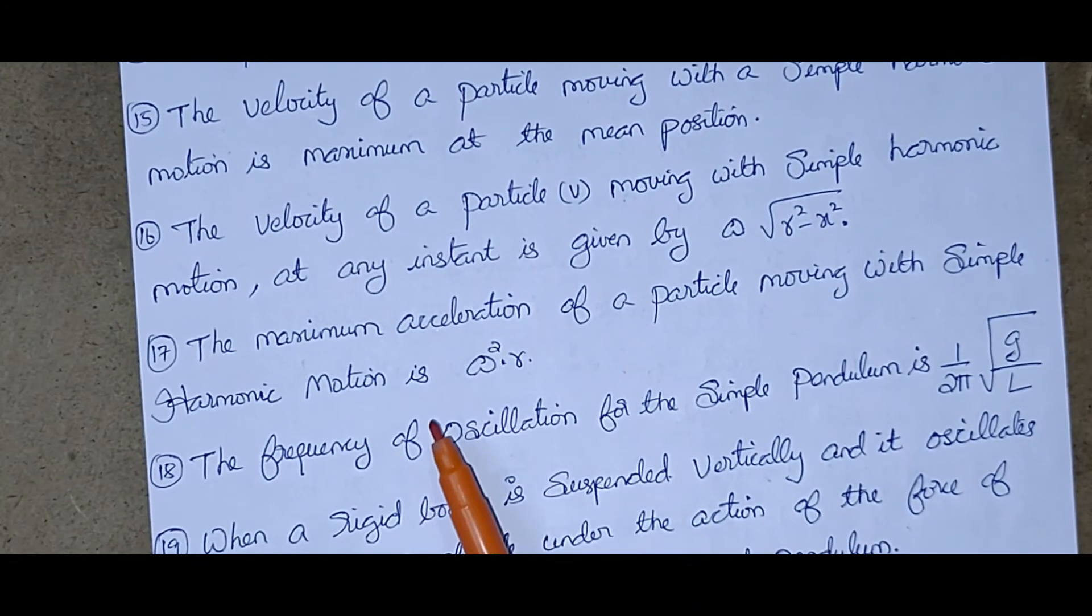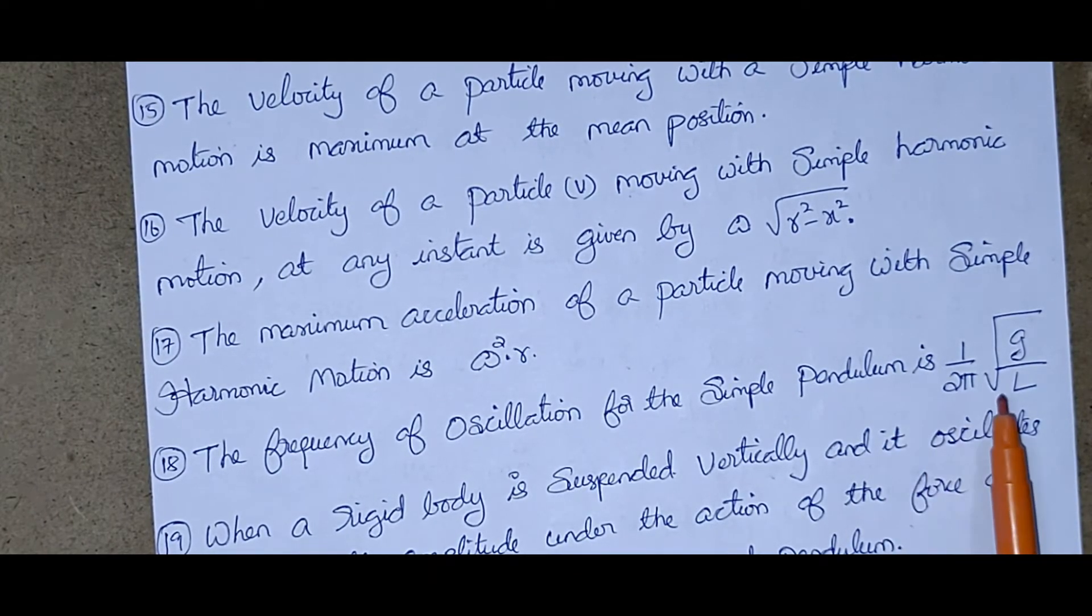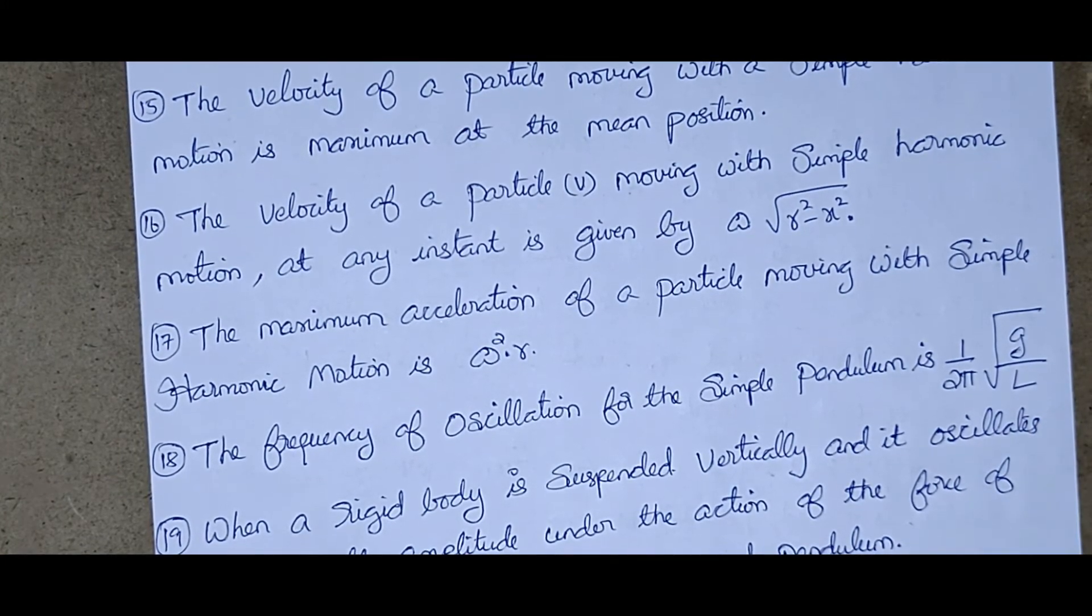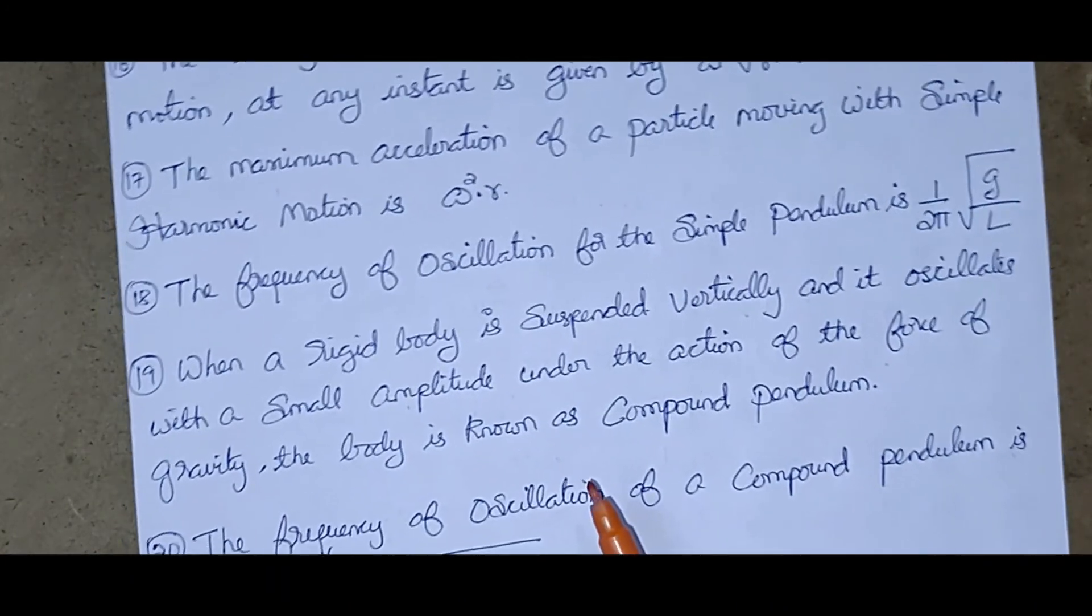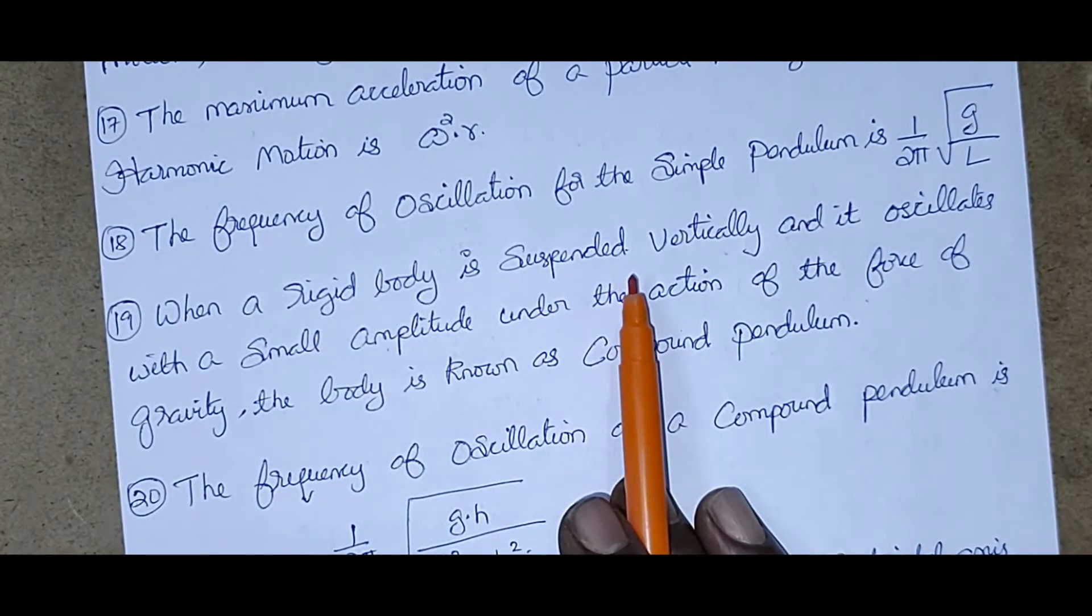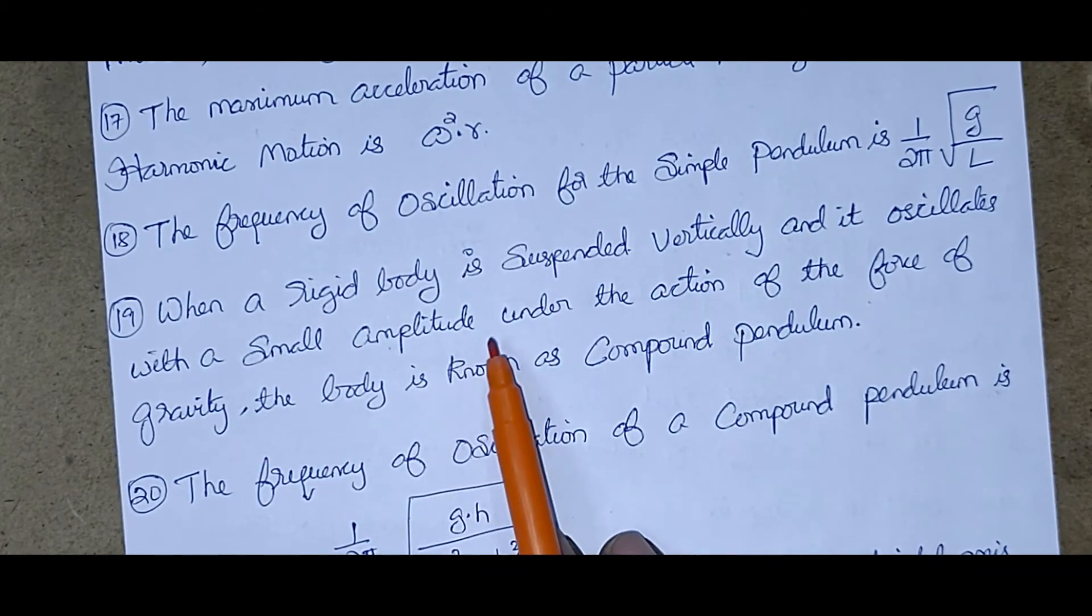The maximum acceleration of a particle moving with simple harmonic motion is omega square into R. The frequency of oscillation for the simple pendulum is 1 by 2π root G by L. When a rigid body is suspended vertically and it oscillates with a small amplitude under the action of the force of gravity, the body is known as compound pendulum.